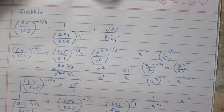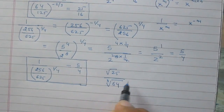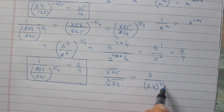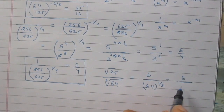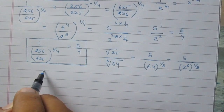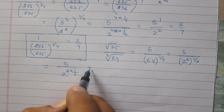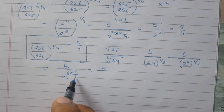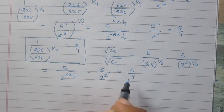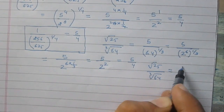Now consider the third part: square root of 25 divided by cube root of 64. Square root of 25 is 5, and cube root of 64 can be written as 64 raised to the power 1 by 3. We know that 64 is 2 raised to the power 6, so it is 2 raised to the power 6 raised to the power 1 by 3. We can simplify it as 5 divided by 2 raised to the power 6 multiplied by 1 by 3. The numerator is 5, and 6 multiplied by 1 by 3 is 2, so in the denominator we have 2 raised to the power 2, which is 4. Therefore, square root of 25 upon cube root of 64 is equal to 5 upon 4.